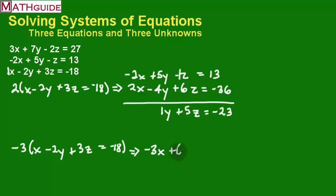If I do that, I'm going to get negative 3X plus 6Y minus 9Z, and that's positive 54. And again, I'm going to write down the top equation, which is 3X + 7Y - 2Z = 27.